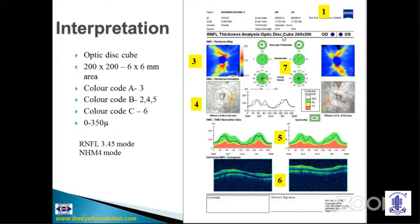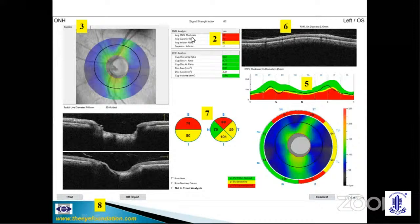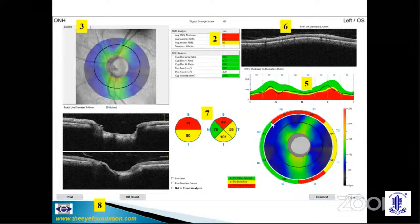Number two is the key parameters table. It has two regions: the RNFL analysis giving average RNFL thickness, superior, inferior RNFL, and asymmetry — with the color code B already given. The optic nerve head analysis shows cup disc ratio, vertical and horizontal cup disc ratio, and rim area. Please note this may not correlate with what you see clinically, because the OCT marks the disc margin on Bruch's membrane opening and the cup margin on ILM termination. If only the RNFL is affected and optic nerve head parameters are normal, you need to revisit your diagnosis and see if you are looking at something non-glaucomatous.